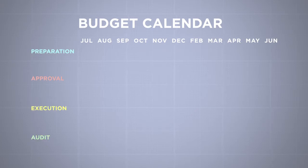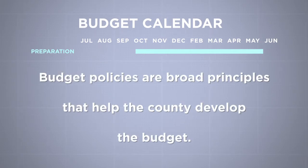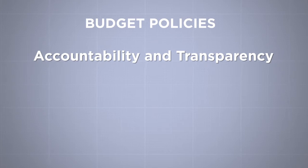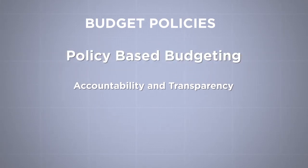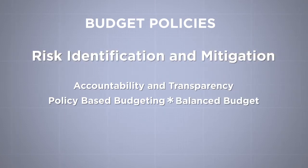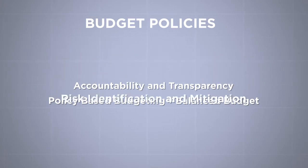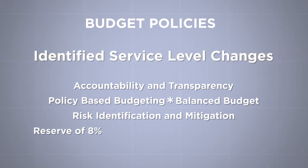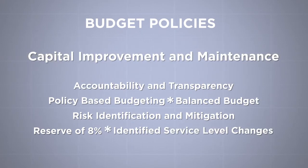The budget cycle goes through four phases: preparation, approval, execution, and audit. The preparation phase starts around October, when the county sets the budget policies. These policies include accountability and transparency, because information about how public monies are spent should be easy to understand; policy-based budgeting, which means resources are distributed according to Board policy direction, historical spending, and federal and state mandates; a balanced budget, because revenues should be equal to expenditures; risk identification and mitigation, because events, circumstances, and issues that pose significant risks should be reduced; a reserve of 8% of the general fund in case of emergencies; identified service level changes, so the public knows what it can expect from the government; and funding for capital improvements and facilities maintenance.